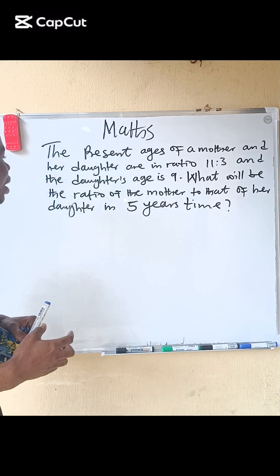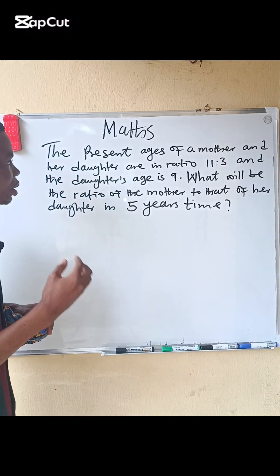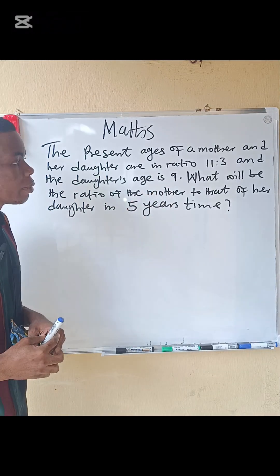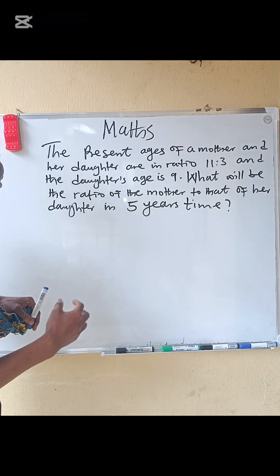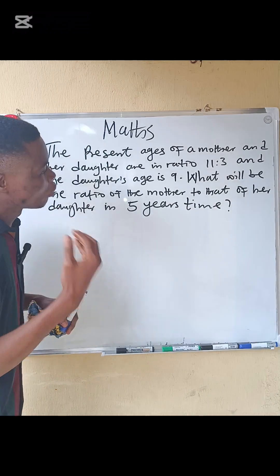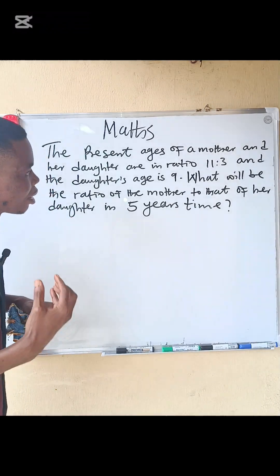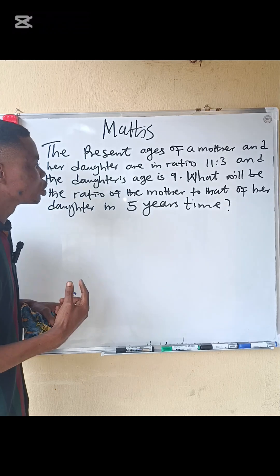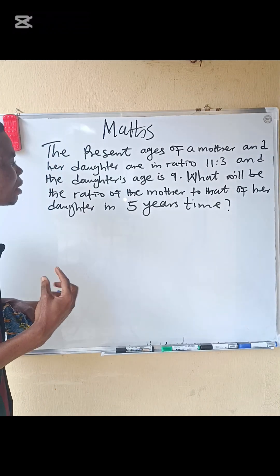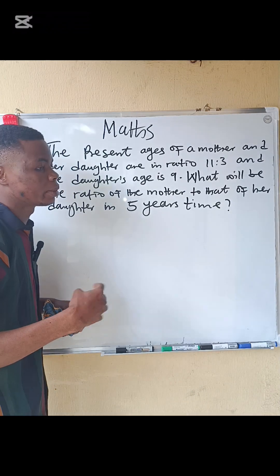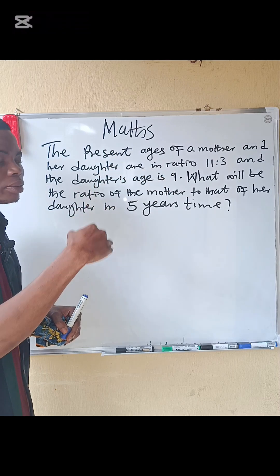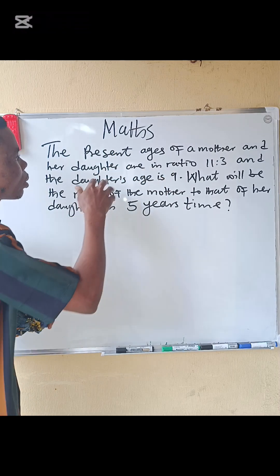The present ages of a mother and a daughter are in the ratio 11:3, and the daughter's age is 9. The question asks: what will be the ratio of the mother's age to the daughter's age in five years time — that is, in the future, not the present.